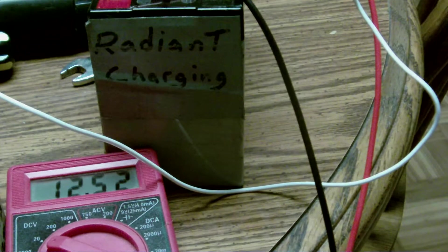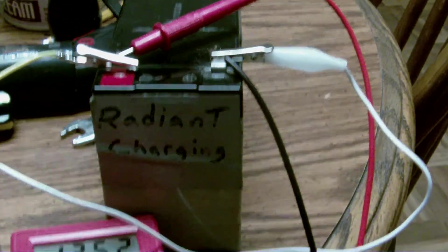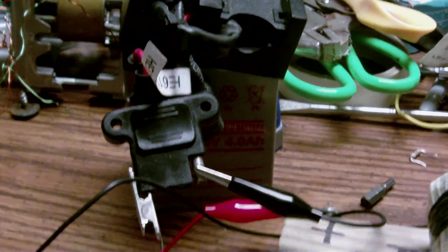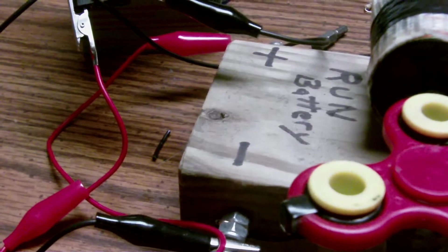That'll never cease to amaze me. So the 12 volts on the charge side, that's what I got the meter hooked up to, and this little Power Wheels battery is on the run side.